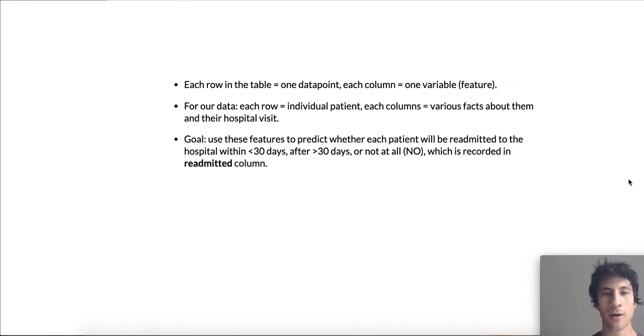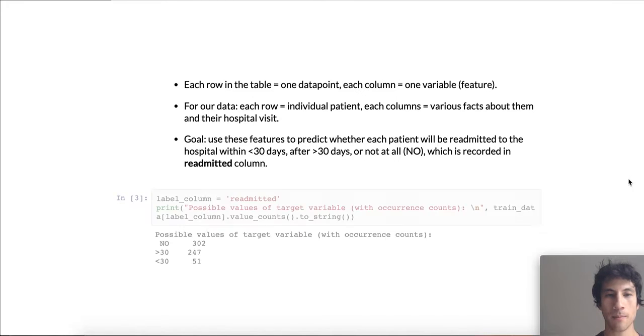Here, our goal will be to use these features to predict whether each patient will be readmitted to the hospital or not within 30 days, after 30 days, or not at all. And this, as I said before, is recorded in the readmitted column. Here we can look at some statistics of the readmitted column. We can see in our dataset of 600 values, there's 300 values that are no, 300 values that are above 30, and 51 values that are less than 30, meaning the patients were readmitted to the hospital within 30 days after this stay, which is obviously a suboptimal outcome.